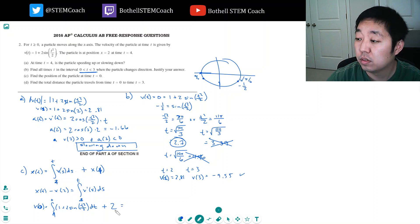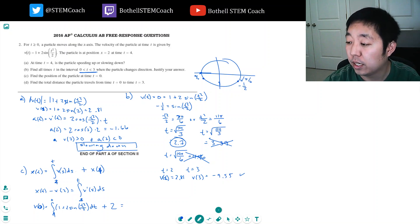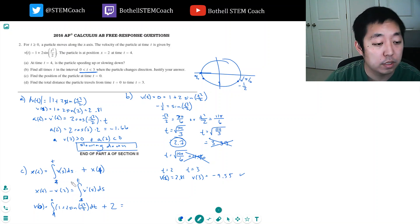And the integral I got was this integral here is 5.815. And add 2 to this, it's negative 3.815. That's the initial position. And part D.